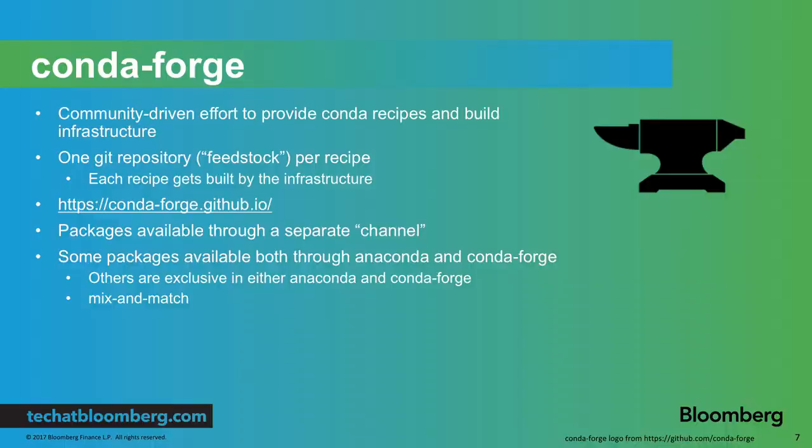Before I jump to our distribution, I want to quickly mention Conda Forge. Conda Forge is a community-driven effort to provide recipes and also build infrastructure. The basic idea is that you have one git repository — called a feedstock — for every recipe, and each of these recipes gets built by the infrastructure. You can access this set of Conda Forge packages through a separate channel, which just tells Conda a source where to look for packages. By default it looks for Anaconda packages, but you can tell it to go to Conda Forge instead or in addition. You can mix and match packages from Anaconda and Conda Forge. There are many smaller, less well-known libraries only available in Conda Forge, and conversely some packages are only in Anaconda — for example, a Windows version of SciPy is not currently available in Conda Forge.